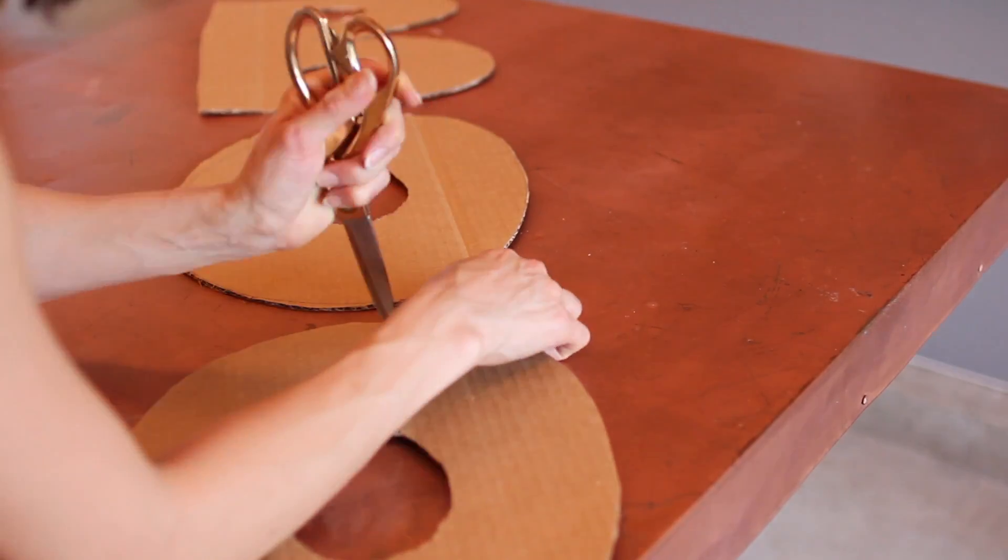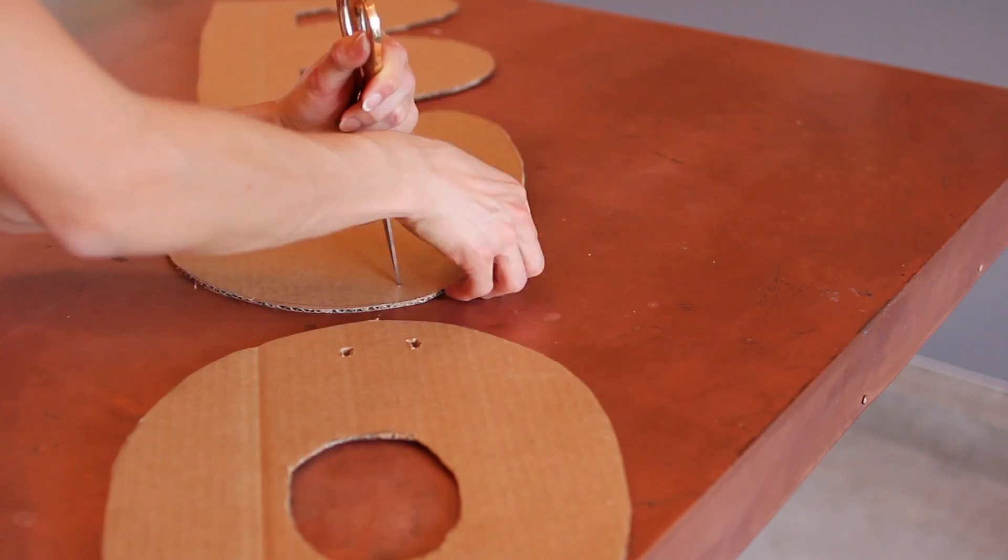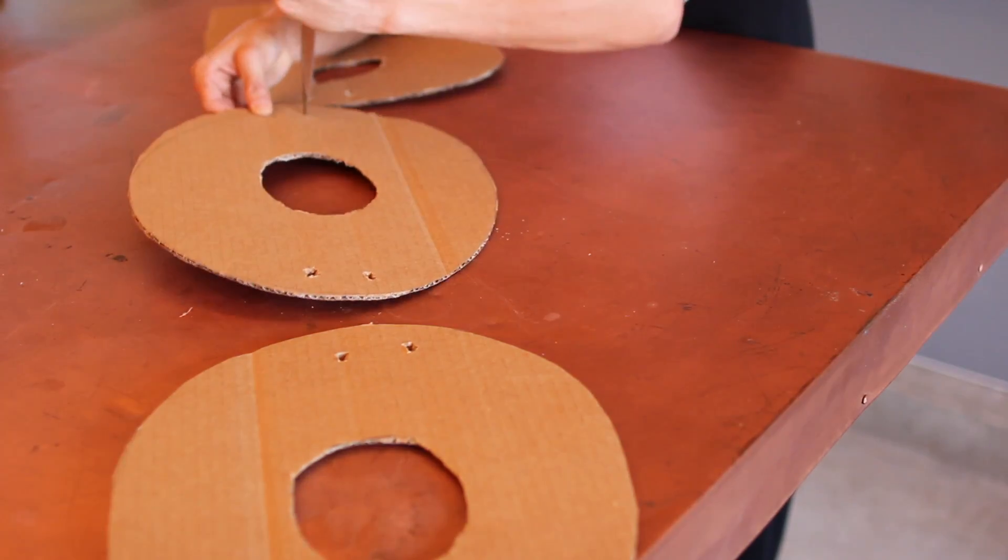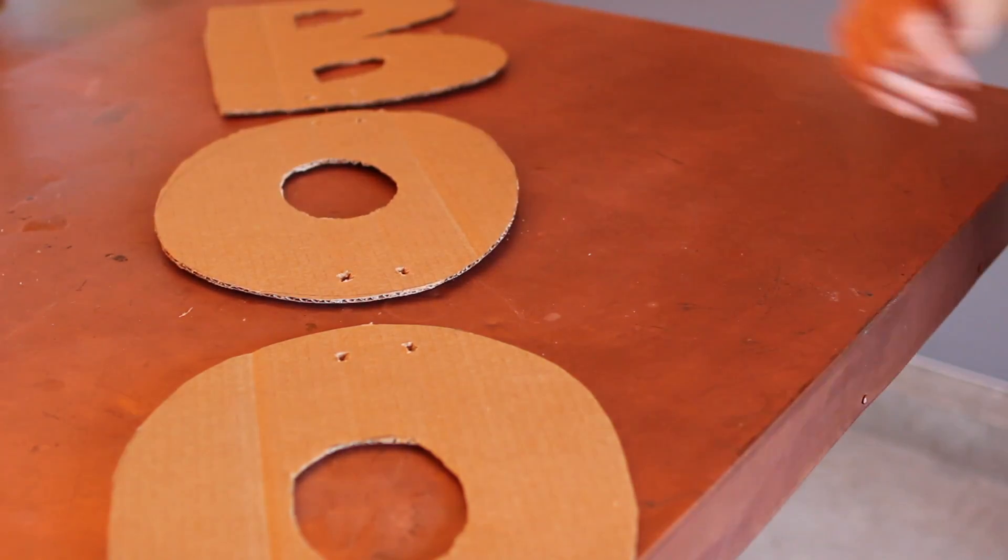When you lay out your letters for B-O-O, I just poked holes on the top of the bottom O and then top and bottom holes on the middle O and then bottom holes on my B because I want to connect them.